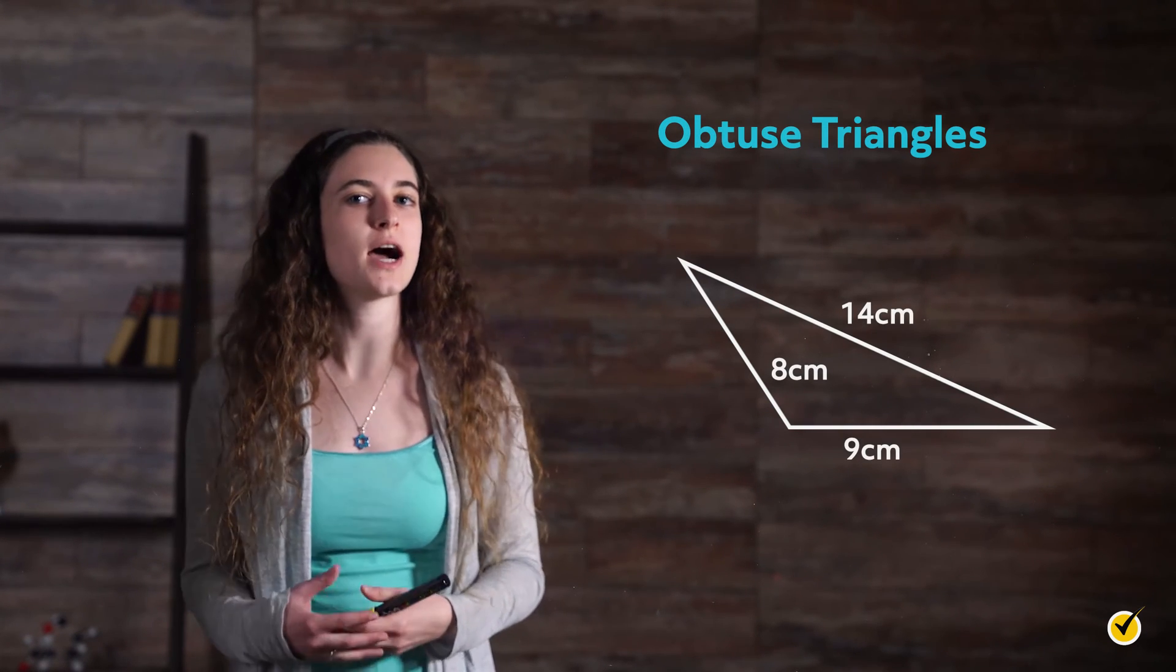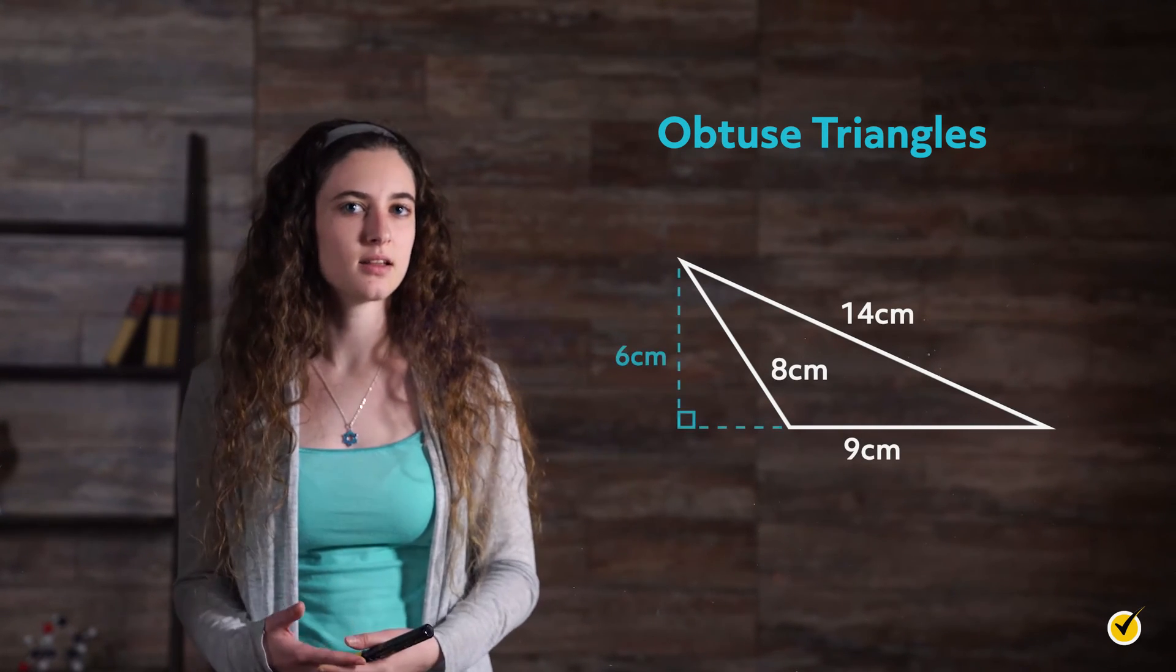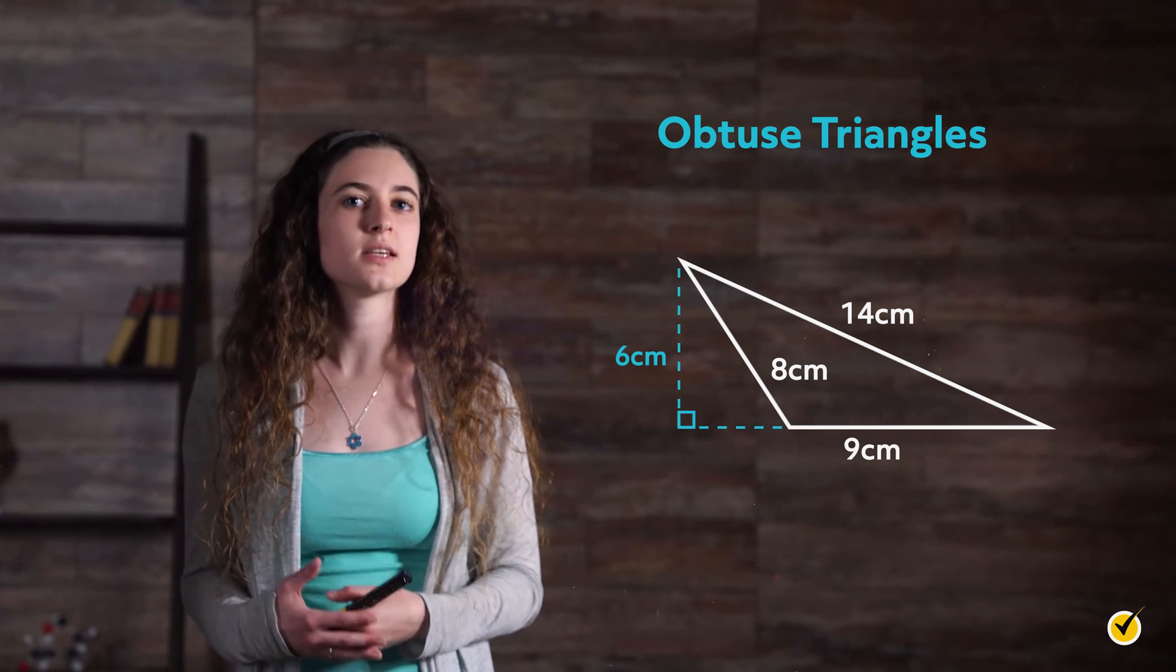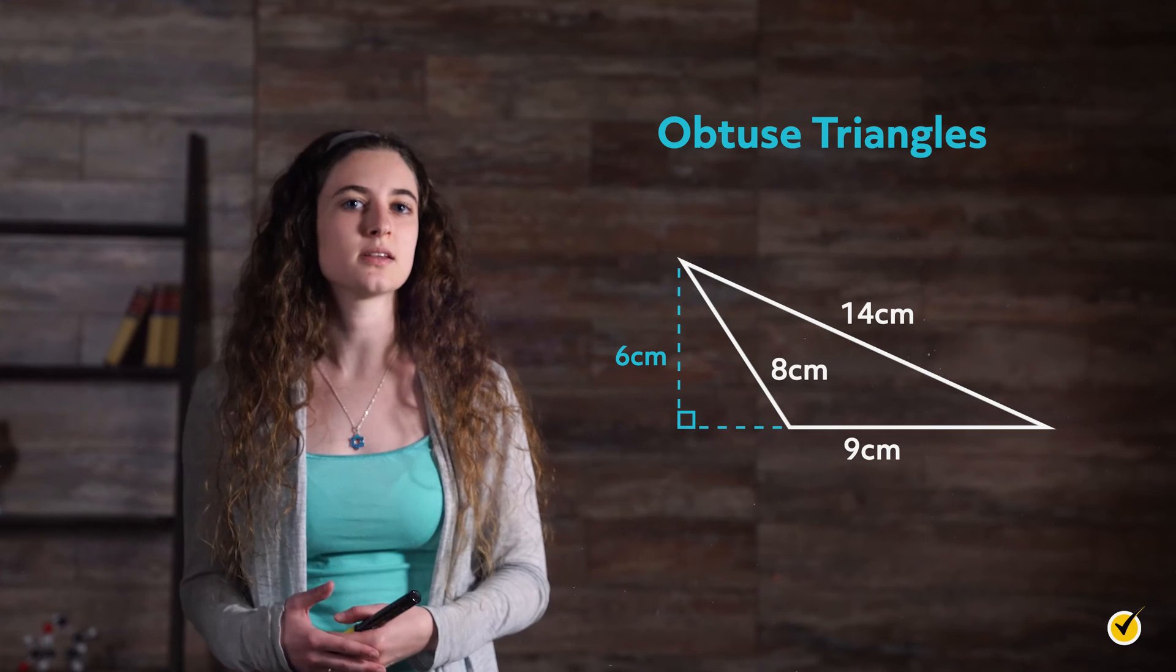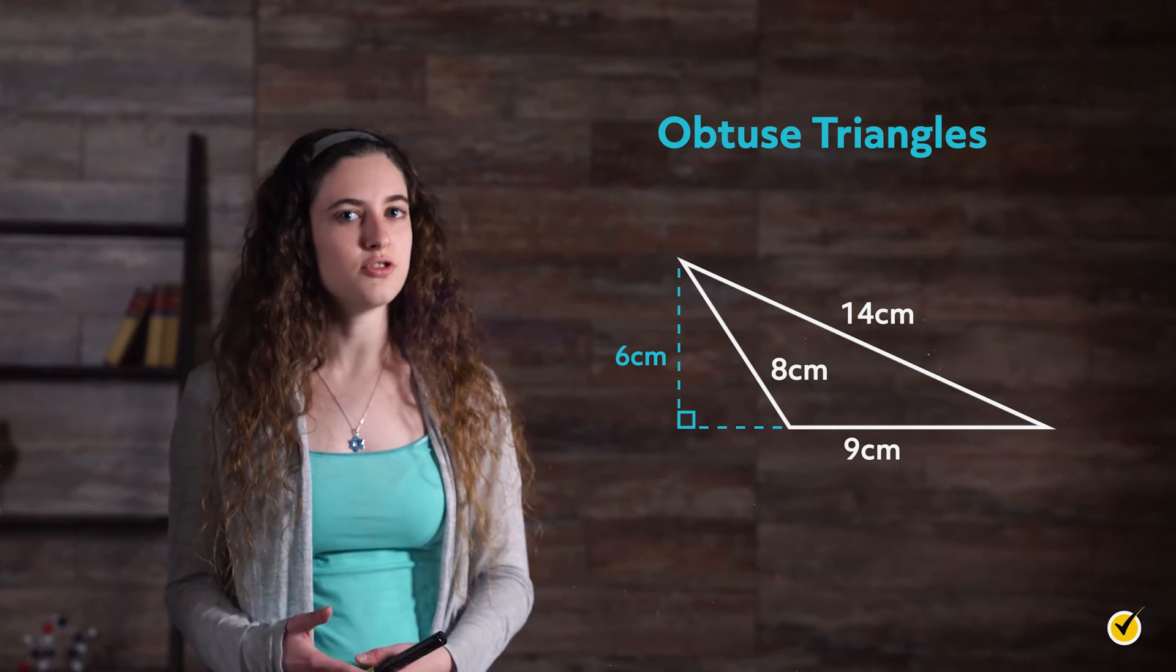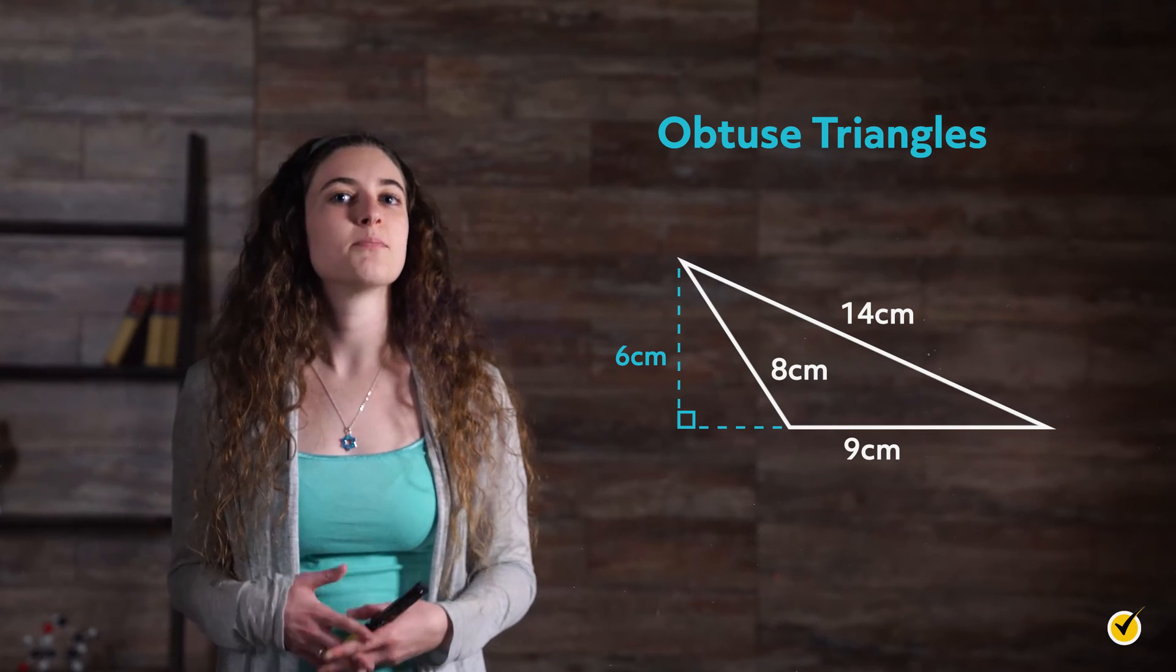The same thing applies to obtuse triangles, except the height or altitude will often appear outside of the triangle, like this. We can see that the height of the triangle is 6 centimeters, and the side it is perpendicular to is the base, which measures 9 centimeters. We don't need the other two numbers at all, so let's plug in the base and the height.